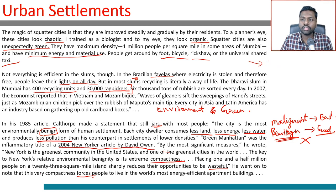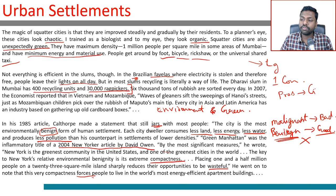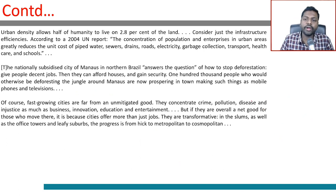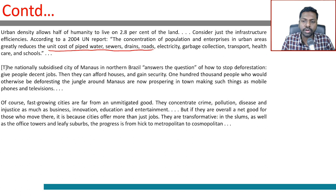To summarize so far: first the passage talks about squatting and squatter cities, then gives examples, then one con, and then several pros about how cities are environmentally helpful. Urban density allows half of humanity to live on 2.8 percent of the land. According to a 2004 UN report, the concentration of population in urban areas greatly reduces the unit cost of piped water, drains, roads, electricity, and garbage collection.